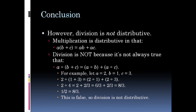Division is not distributive because it's not always true that A divided by parentheses B plus C equals A divided by B plus A divided by C. Let A equal 2, B equal 1, and C equal 3. This gives 2 divided by the quantity 1 plus 3 equals 2 divided by 1 plus 2 divided by 3, which is one half equals 8 thirds. That is false. So division is not distributive.